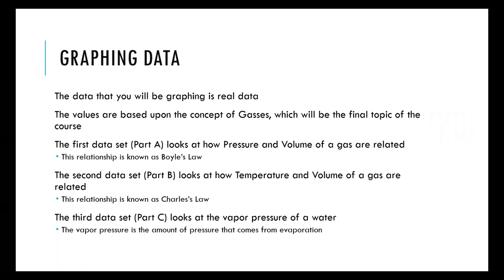In the first data set, you're looking at how pressure and volume of a particular gas are related — this relationship is known as Boyle's Law, covered later in the semester. The second part looks at the relationship of temperature and volume, known as Charles' Law. The third part looks specifically at the vapor pressure of water and how it changes based on temperature. Part A has two graphs, Part B has one graph, and Part C has two graphs.